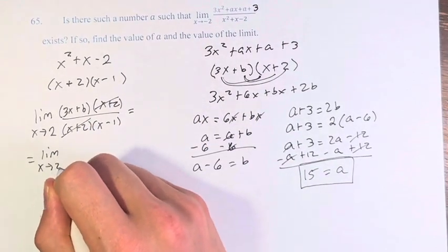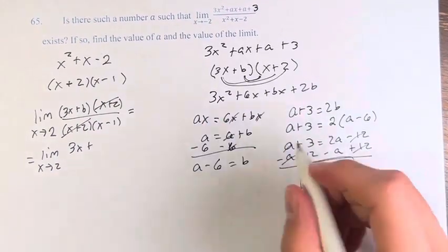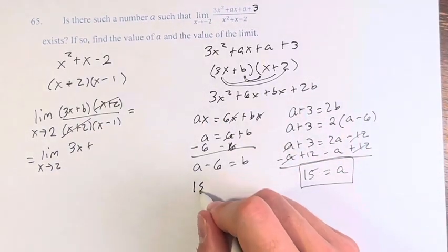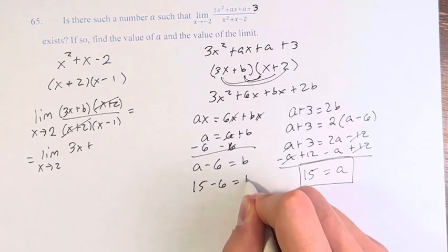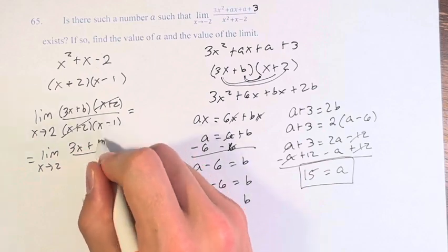This is canceling out. We have the limit as x approaches 2 of 3x plus, well, what is actually b? If a is 15, b is a minus 6, 15 minus 6, b is 9. So this is 3x plus 9 over x minus 1.